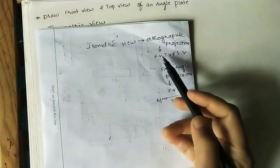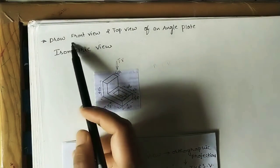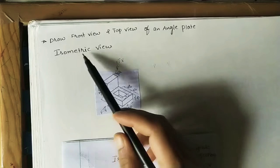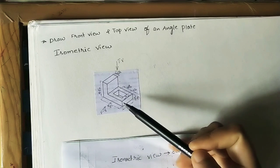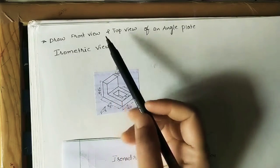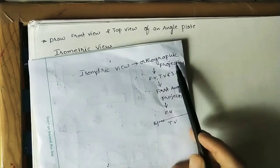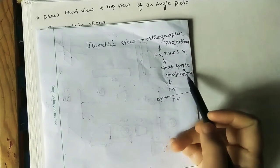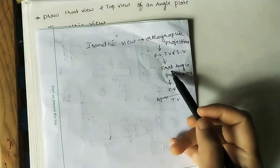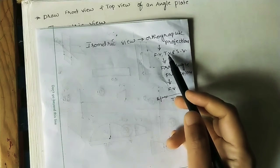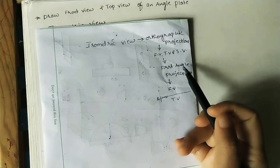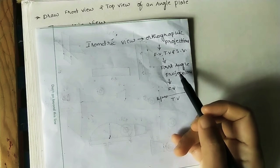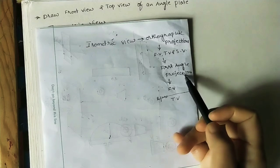We are converting a 3D view into 2D views. The given question asks us to draw the front view and top view of an angle plate isometric view — that is, the three-dimensional view. Side view has not been asked; only two views are required. We are following the first angle projection method. Third angle projection is also possible, but since the question doesn't specify, we take first angle projection. Please check the linked video on first and third angle projection.